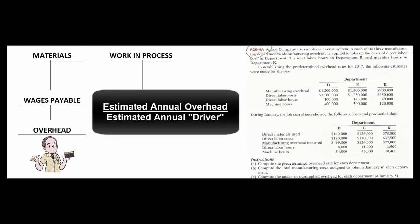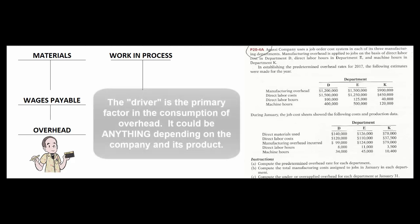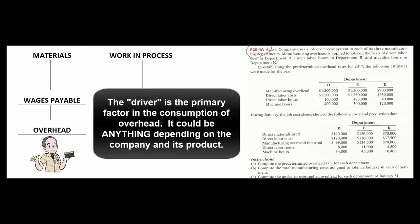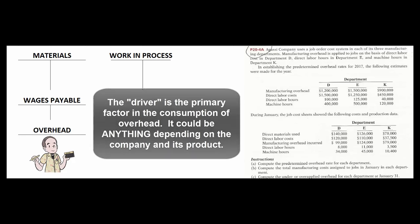To create the overhead application rate, we estimate our total annual overhead for the upcoming year and divide it by our total estimated driver. The driver is some cost or factor we think causes us to incur overhead costs. If we're in a labor-intensive business where all laborers make about the same wage, we might use direct labor hours as the driver.